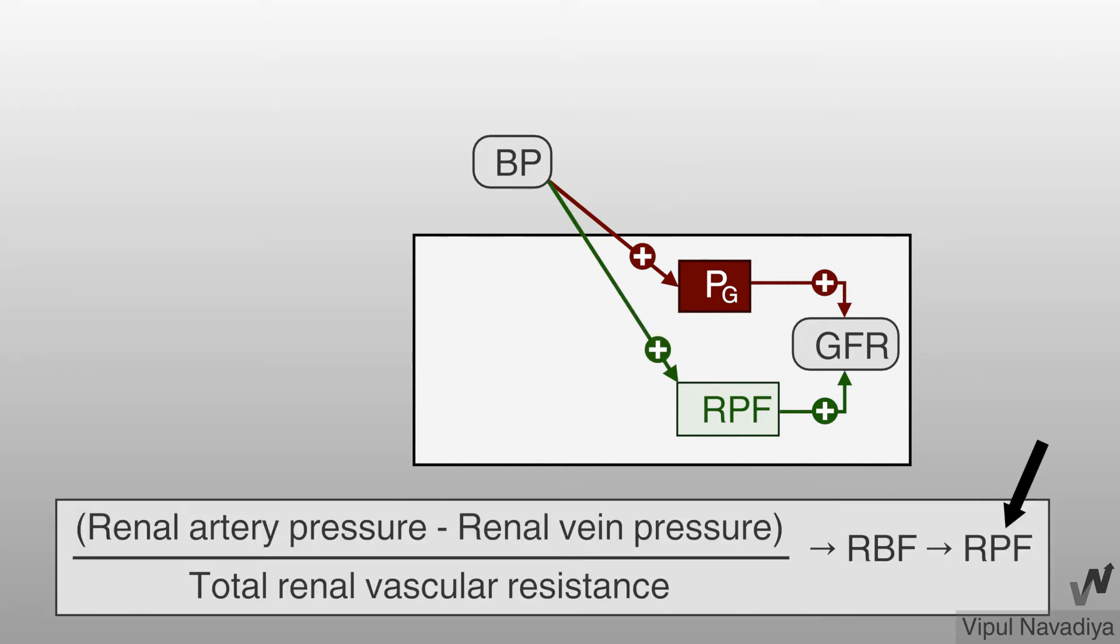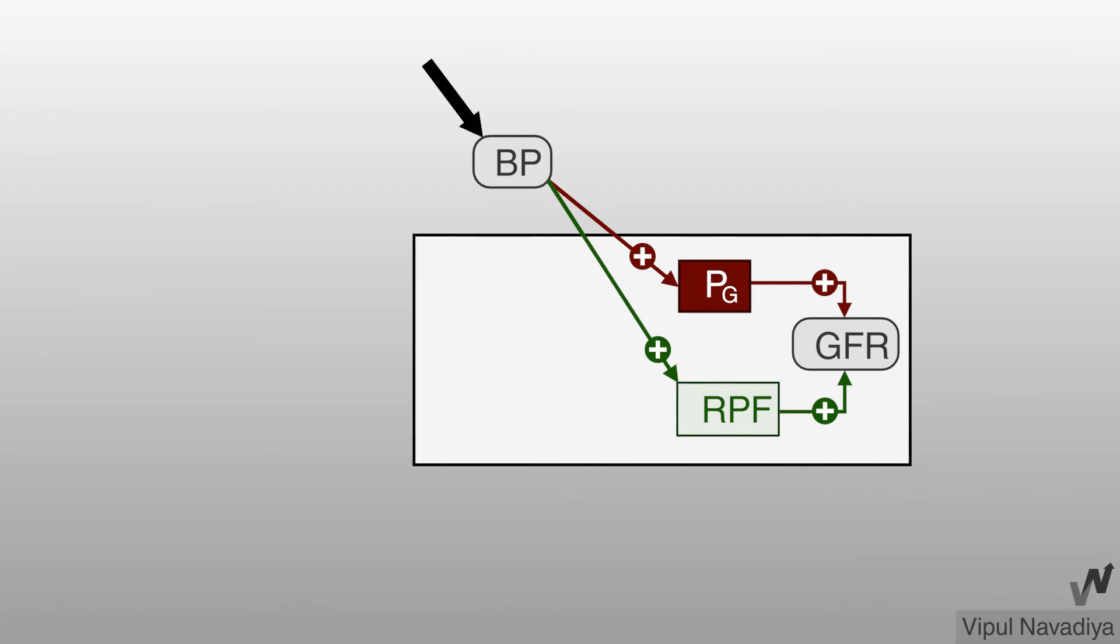Also we saw earlier that renal blood flow and thereby renal plasma flow is determined by pressure difference between renal artery and vein divided by total renal vascular resistance. See renal arterial pressure is one of the parameters here. Thus systemic blood pressure may affect GFR by affecting glomerular hydrostatic pressure and renal plasma flow.